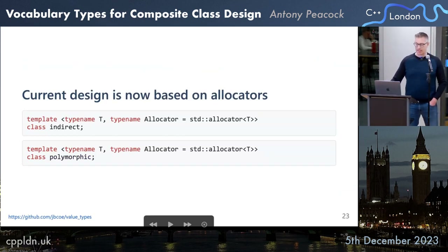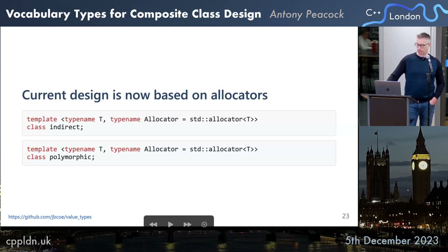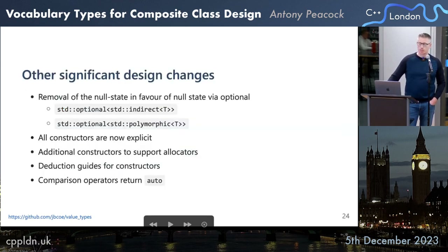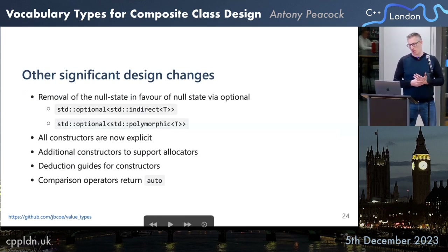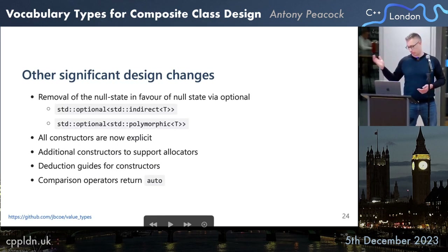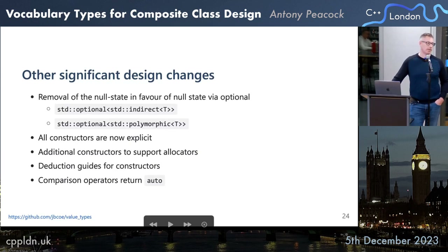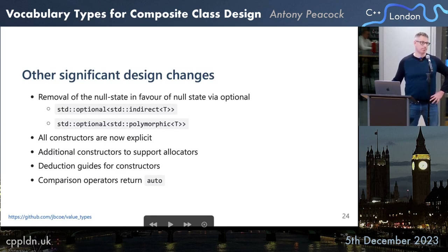The allocator is now part of the type information — you can think of these types as a container of one. Another significant design change: previously we modeled these more like pointers with a null state. We found that raises the question of what a std::optional<std::indirect<T>> means — you'd have a double null state. The right approach is to have no null state: we require types to be default constructible, or in the case of polymorphic, you must pass in the information to instantiate the derived type correctly at construction. These types will always hold a value, except for one corner case: the moved-from state.